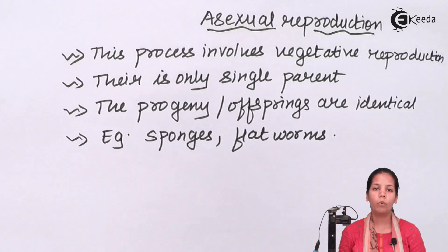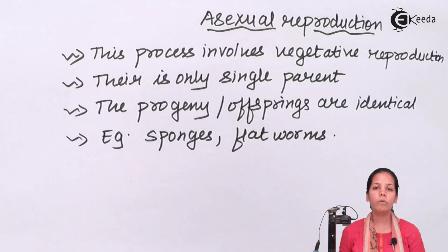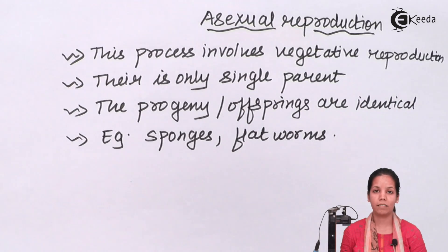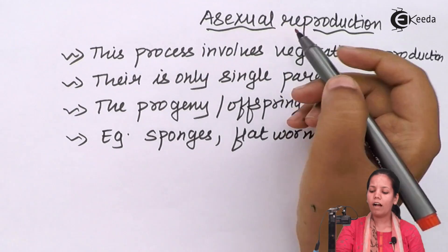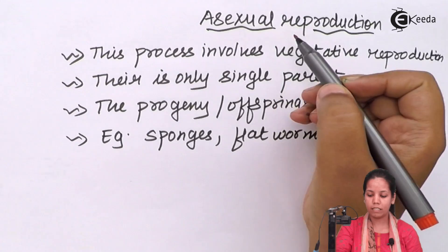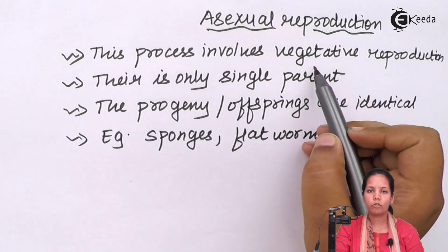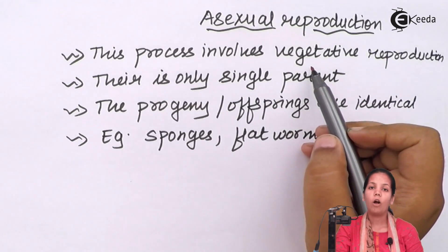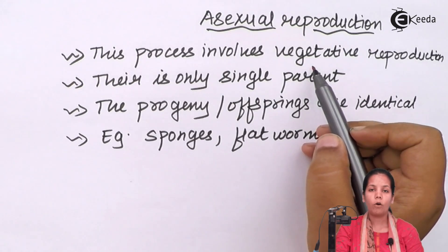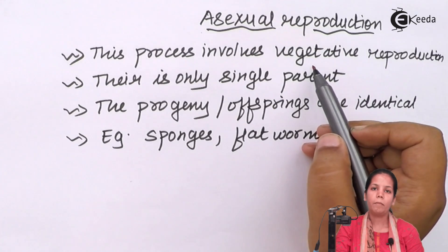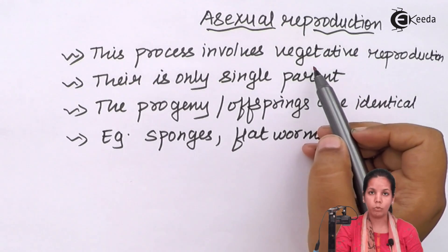One parent grows mitotically into two different progeny or offspring, and whenever this happens, equal distribution of all the genetic material and cytoplasm takes place. The process of vegetative reproduction can also be asexual, and regeneration in planaria or budding in hydra are both forms of asexual reproduction.